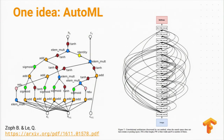On the left you see an alternative to a standard LSTM cell that was generated automatically and performs better in some cases. On the right you have an image model with a wild set of interconnections that performs at or beyond the state of the art while having been generated completely automatically. So who knows what's possible once you have a thousand times more compute? We intend to find out.